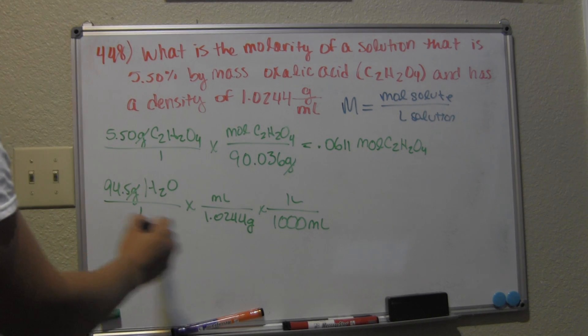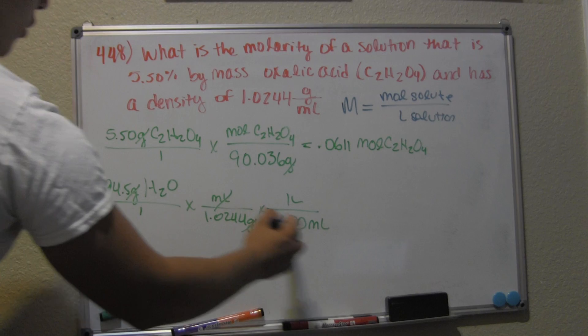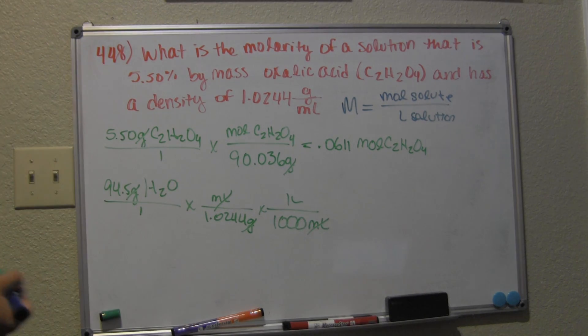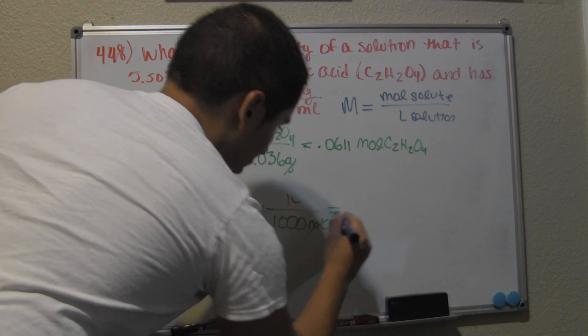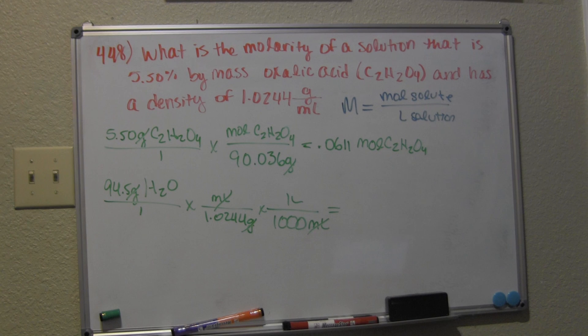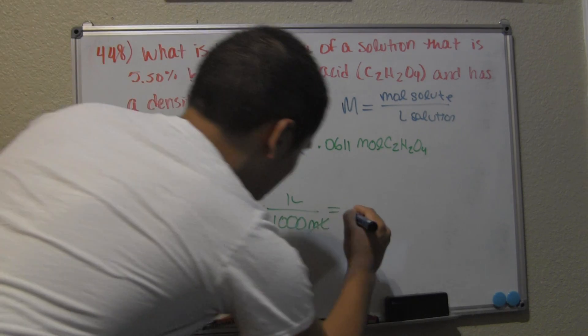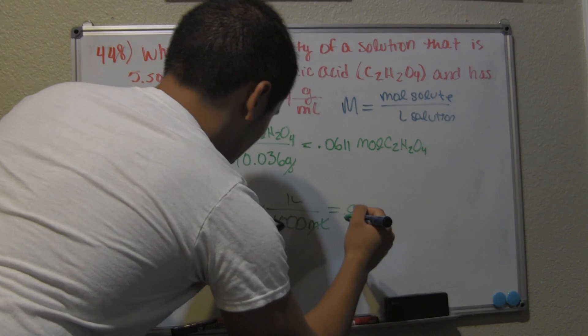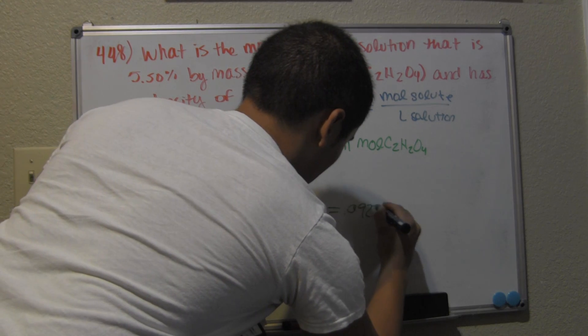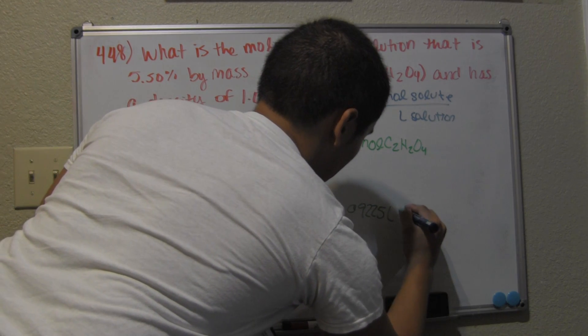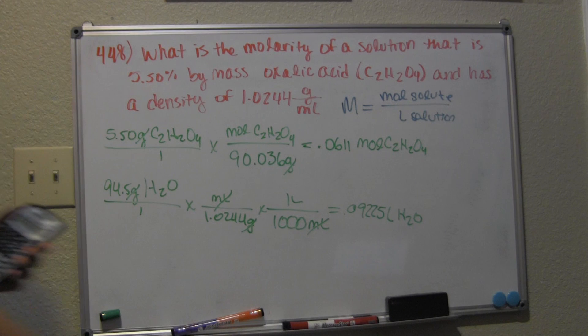When doing that calculation—94.5 divided by 1.0244 divided by 1000—we're left with 0.009225 liters of H₂O, which is our solvent. Just a reminder, it is not water, I'm just labeling it as water because it's easier to visualize.